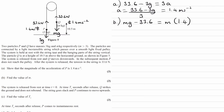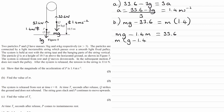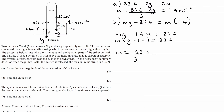We want to rearrange for M. I'll bring the M×1.4 term to the left and the 33.6 to the right. So subtract M times 1.4 and add 33.6 to both sides. Factorize the left-hand side — remembering we're trying to rearrange for M. These two things are multiplied together, so I can divide by G minus 1.4. M is then 33.6 all over G minus 1.4. Typing this in with G being 9.8, we get M = 4.